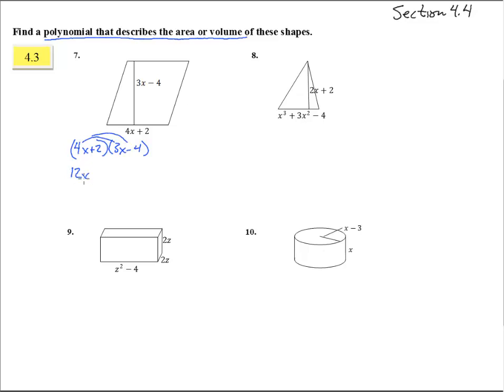So we get 12x squared minus 16x plus 6x minus 8. That's 12x squared minus 10x minus 8. So this is the polynomial that represents the area, which is those two times together.